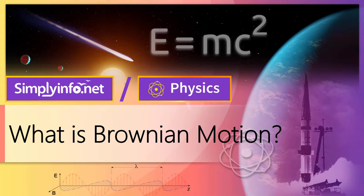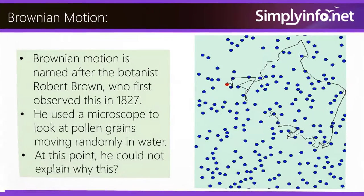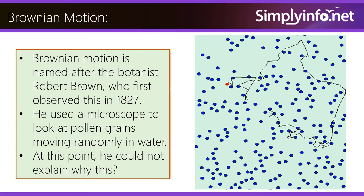Brownian motion, or pedesis, from ancient Greek meaning 'leaping', is a random motion of particles suspended in a fluid — that is, a liquid or a gas — resulting from their collision with the fast-moving molecules in the fluid. Brownian motion is named after the botanist Robert Brown, who first observed this in 1827. He used a microscope to look at pollen grains moving randomly in water, but at this point could not explain why this happens.